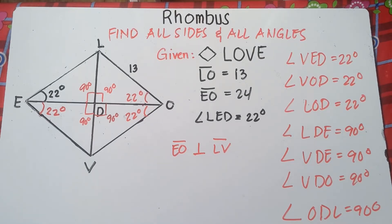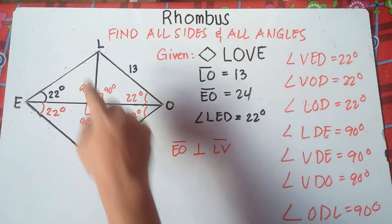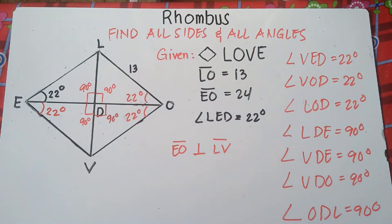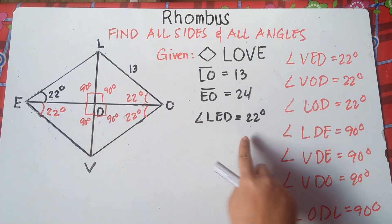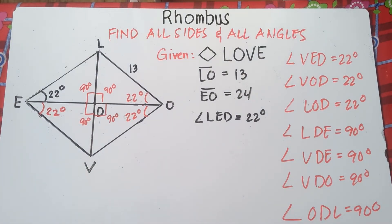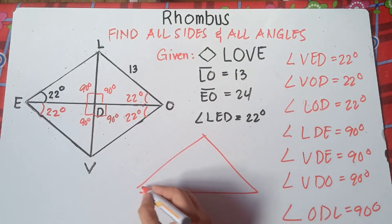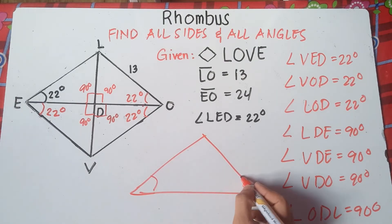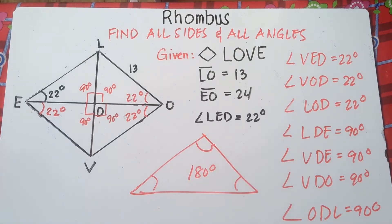So we're almost there, class — just one more angle. Do not forget that in a triangle — any kind of triangle, whether isosceles, equilateral, scalene, or acute — the sum of interior angles must be 180 degrees. Any kind of triangle: right, obtuse, scalene, equilateral, isosceles — the sum of interior angles must always be 180 degrees.